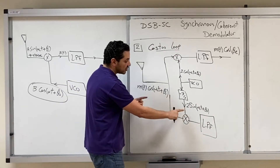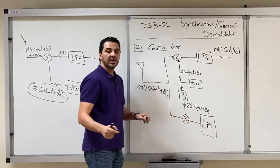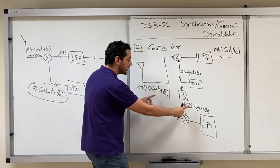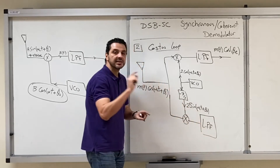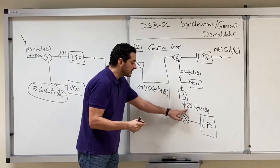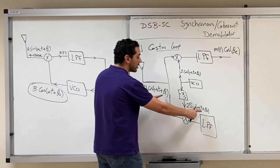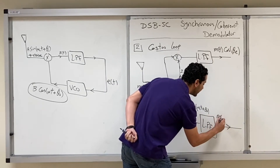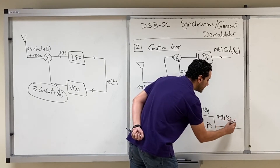The lower branch multiplies the received signal by 2·sin. Cosine times 2·sine gives half-sine of the sum — a high-frequency component at 2ωc that does not pass — and half-sine of the difference. The half cancels with the two, and sine of the difference gives sine of the error between the two phases. So the lower branch output is m(t)·sin(θ_error).